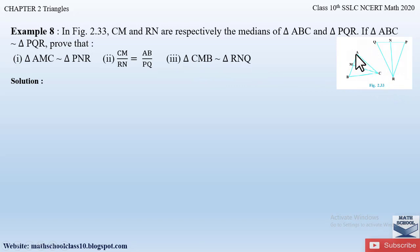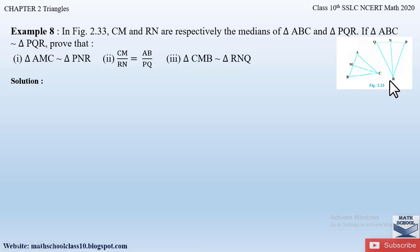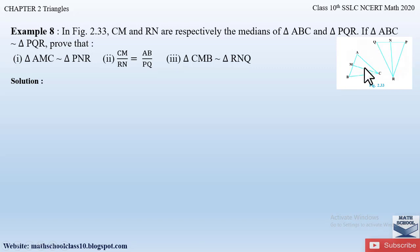Looking at figure 2.33, we are given two triangles ABC and PQR. CM and RN are the medians of these two triangles respectively. Since triangle ABC is similar to triangle PQR, we have to prove three things: triangle AMC is similar to triangle PNR, CM/RN = AB/PQ, and triangle CMB is similar to triangle RNQ.